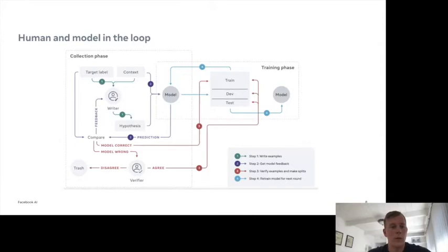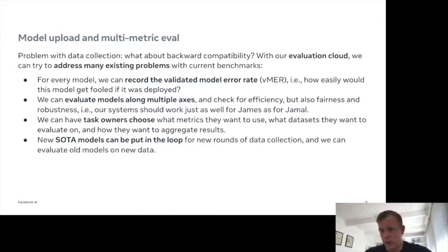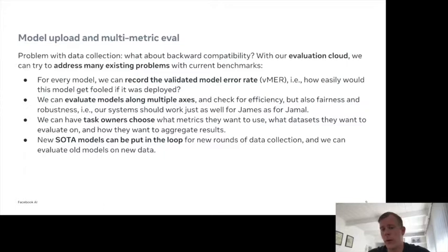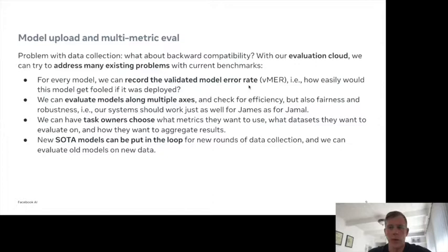There's a problem with this kind of data collection: you want backward compatibility. As you keep going through the loop, old models can't easily be evaluated on new rounds of data collection. An elegant solution is to switch to an evaluation cloud where all the models tested across different rounds are stored, giving us the backward compatibility to go back and try old models on new datasets. Rather than looking at static test set performance, we can put models in the loop and record their validated model error rate — that is, verified-by-humans examples where the model gets things wrong.